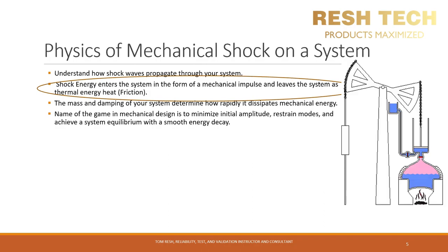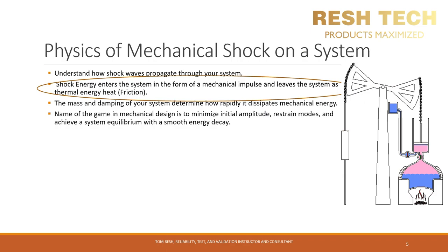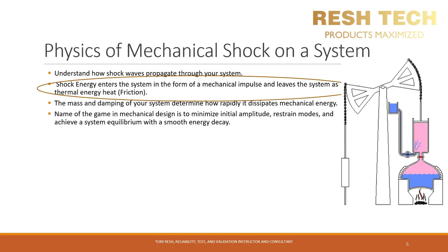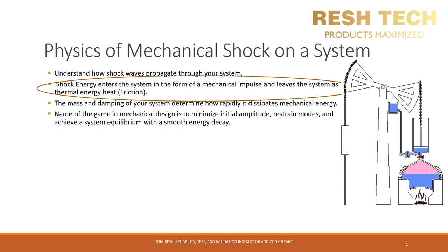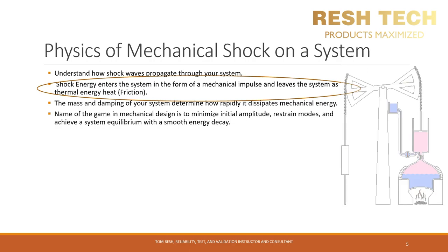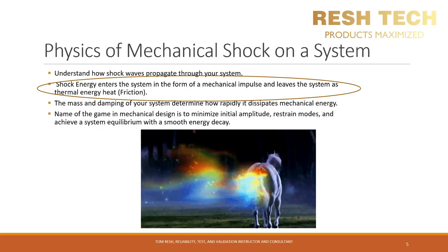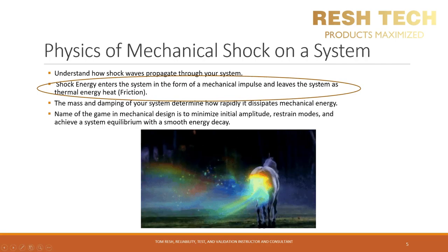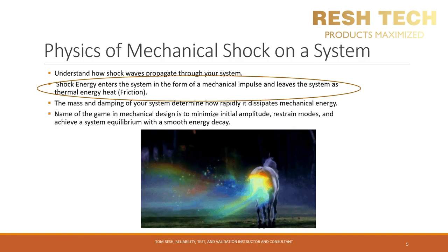Mechanical energy enters a system in the form of a mechanical impulse and leaves the system as thermal energy. As we learned in school, the first law of thermodynamics states that energy cannot be created or destroyed — it can only change form. When you see an object move, displace, or oscillate and then come to a stop, the energy simply changes form and dissipates as heat from the system until all of the energy has changed from mechanical energy to thermal energy via friction.